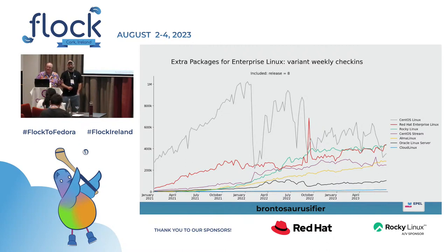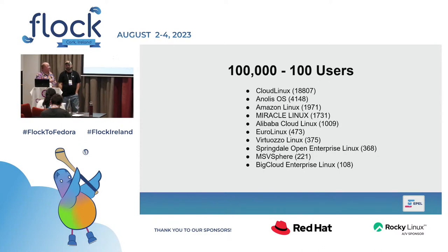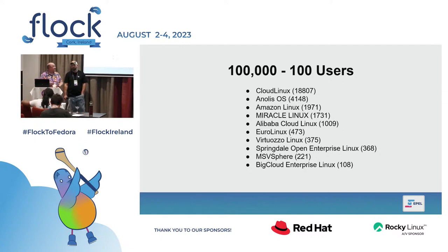I then went and found all the distributions that have been checking in, and this is where for me it's fun. This is where it gets weird — all 101. Cloud Linux, which was at the bottom of the last one, is at the top of this one. This is 100,000 to 100 users. Looking at this, I'd heard of all of these, but Anolis — I don't even know how to pronounce that. Anolis is my guess. That is a Chinese distribution. Is that the one backed by Alibaba? It was on the Alibaba website. That was the one that stood out to me.